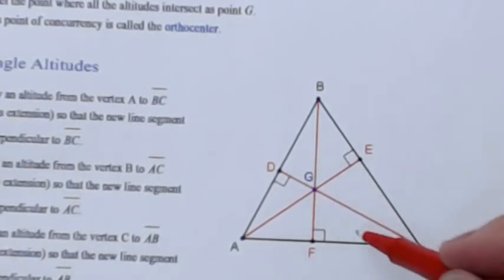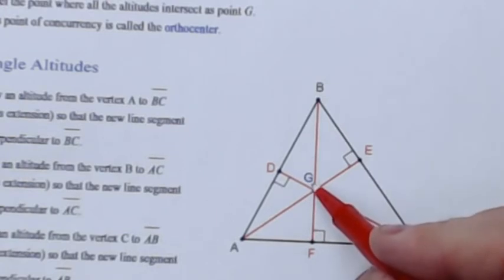Now, where these red altitudes all meet at point G, that's called the orthocenter.